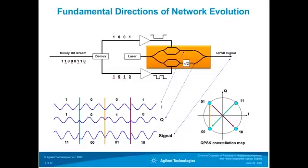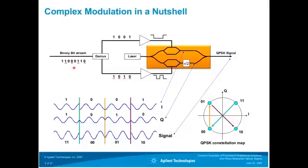So very briefly, how complex modulation really works. All you want to do is transmit a binary bit stream. In the case of a QPSK signal, the binary bit stream is demultiplexed into two bit streams at half the bit rate. There is a laser that serves as a carrier. The binary bit stream is amplified to an analog signal. These analog signals are then encoded using a double Mach-Zehnder structure — one Mach-Zehnder modulator on each arm — with an additional pi-half phase shifter so that both output signals are shifted by pi-half with respect to each other, and then the two signals are combined to yield a QPSK signal.